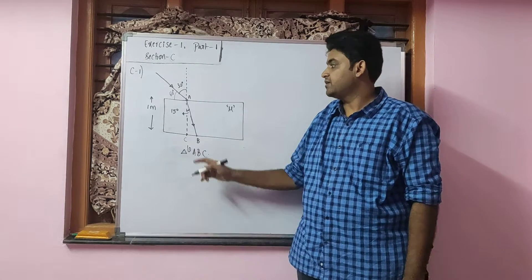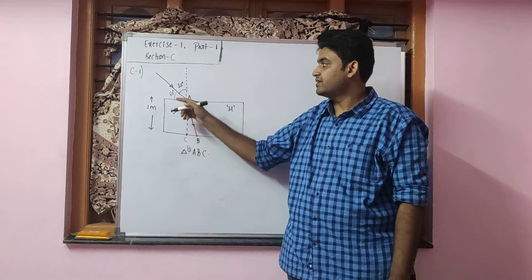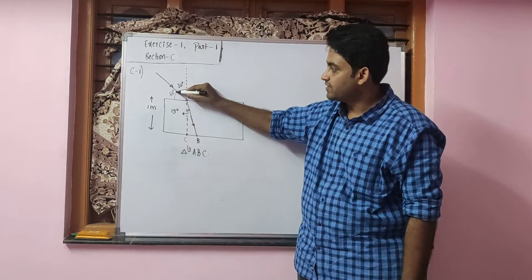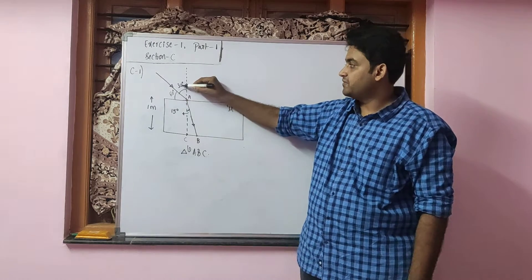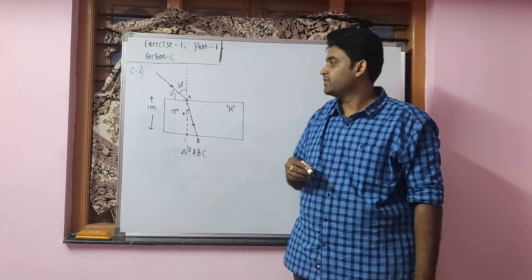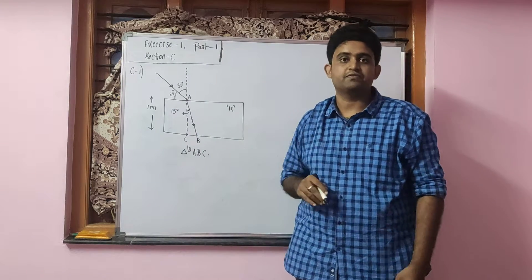So here we are given with a glass slab of thickness 1 meter. On this glass slab there is an incident ray. You can see carefully that the angle with the plane surface is given as 60 degrees. So angle of incident should be 30 degrees here. And it is also mentioned that after refraction the angle of refraction is given as 15 degrees.